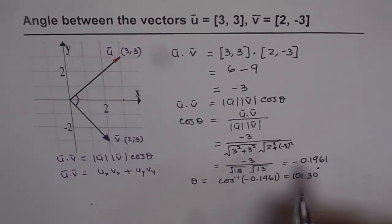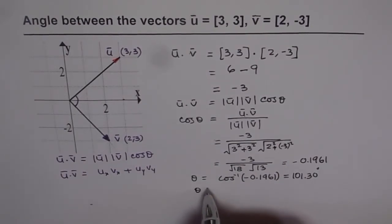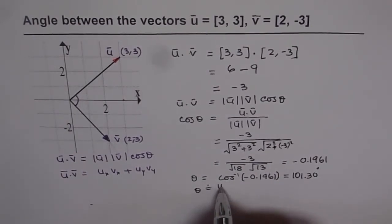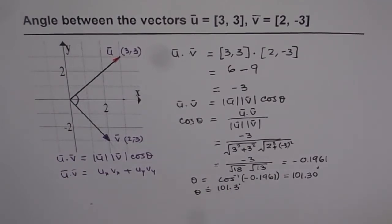So that is the angle between the two vectors. We get theta approximately equal to 101.3 degrees. That is how we can find the angle between two vectors.